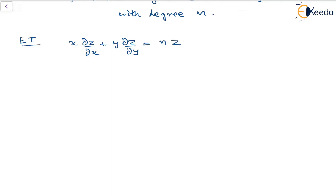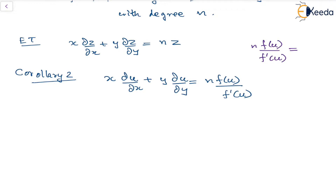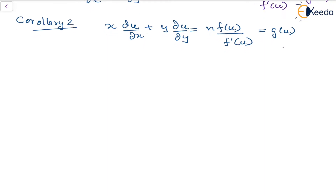And also, Corollary 2, which we have seen in the previous session, states that for z being a function of u, where u may not be homogeneous, we get the result: x·du/dx + y·du/dy = n·f(u)/f'(u). Now, if we say that n·f(u)/f'(u) is written as g(u) overall, then we have x·du/dx + y·du/dy = g(u). This is our Corollary 2, which we have already seen. Let us call this equation 1.